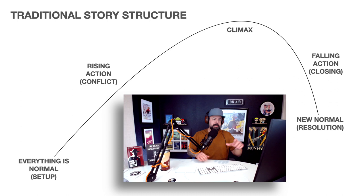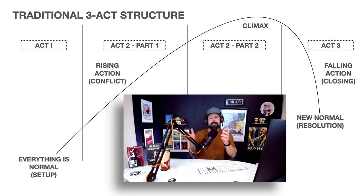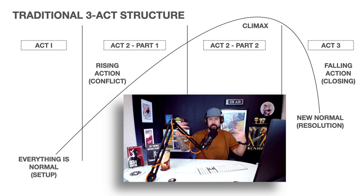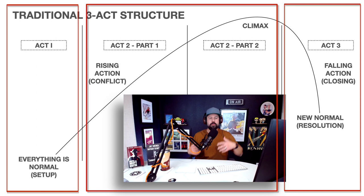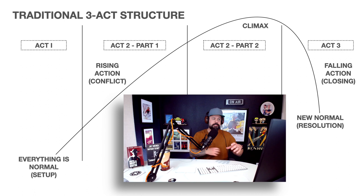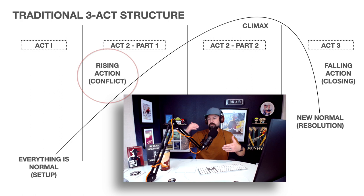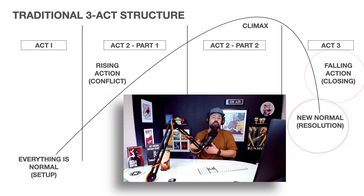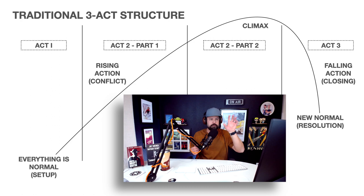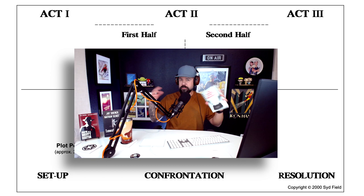As storytelling has changed — we have TV shows, serial stories, episodic storytelling — this does alter slightly. And in terms of movies, it alters a little bit more. The traditional three act structure applies three acts to the storytelling arc: act one, part one of act two, part two of act two, and then act three. Act two is long. The keys here are that everything is as it should be, then conflict arises, characters are thrown for a loop, and they develop all the way to the climax, where they make some critical decision or take some critical action to move into the new normal.